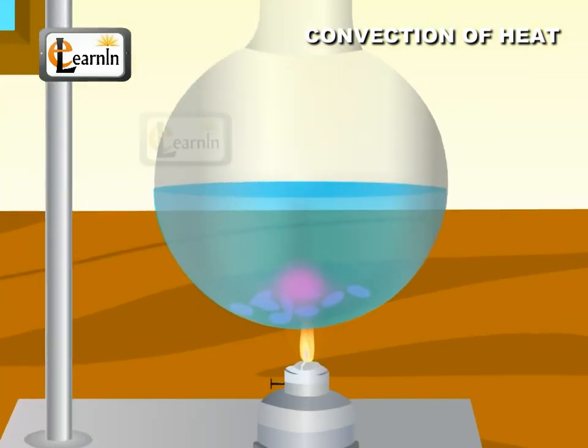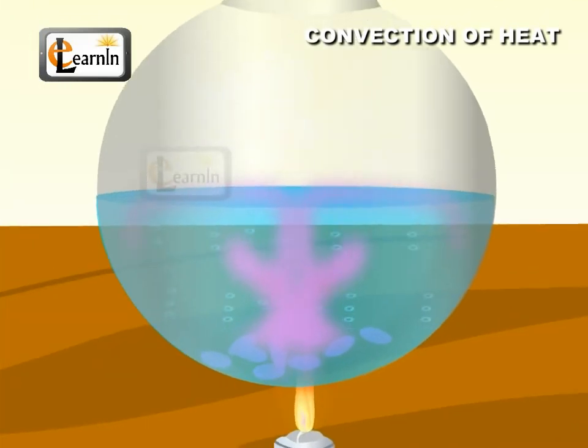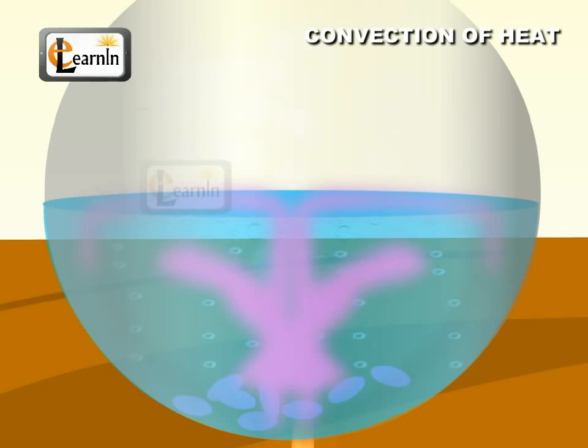Slowly heat the flask. Water molecules go up from the level of the potassium permanganate, reach the surface of the water, and then come down touching the sides of the flask.